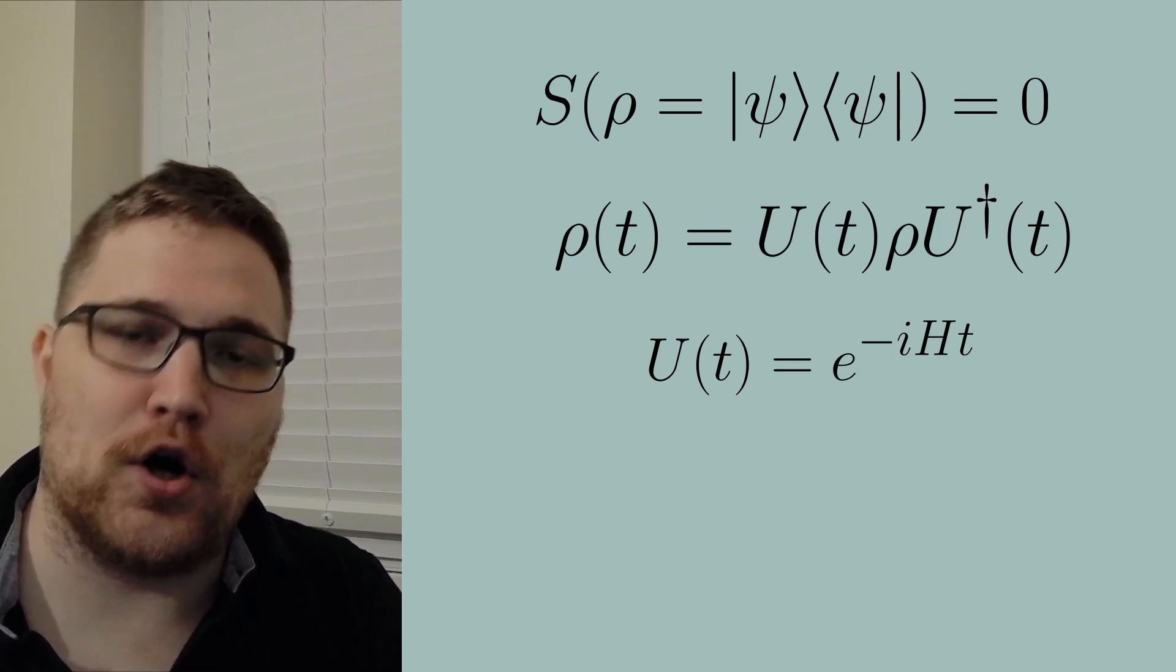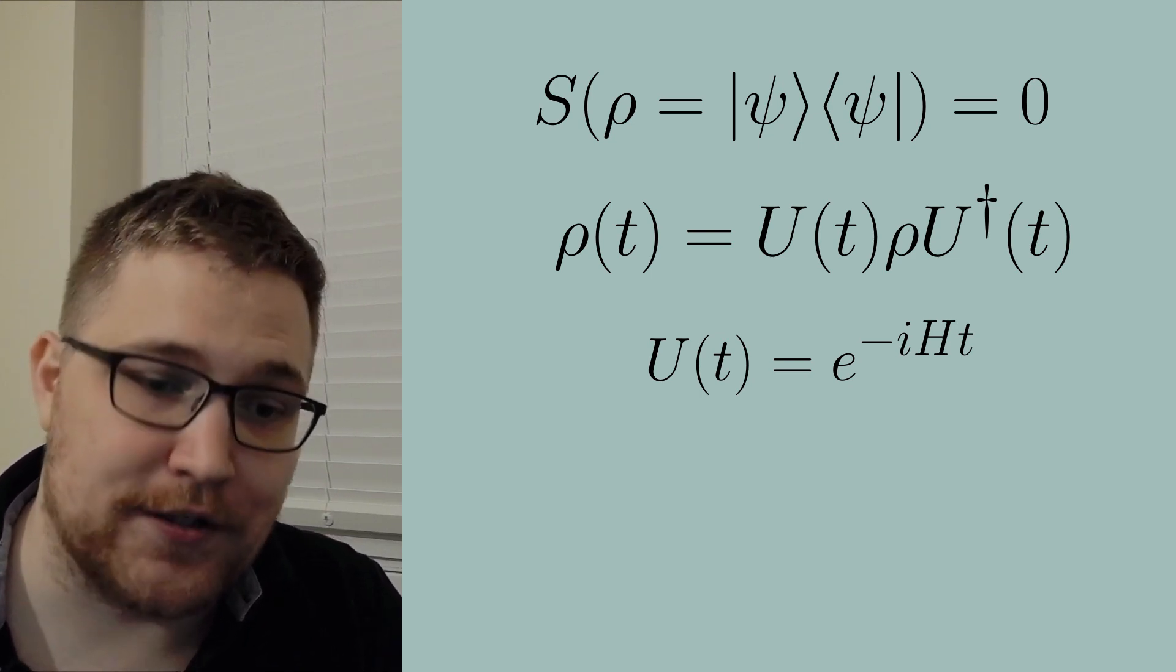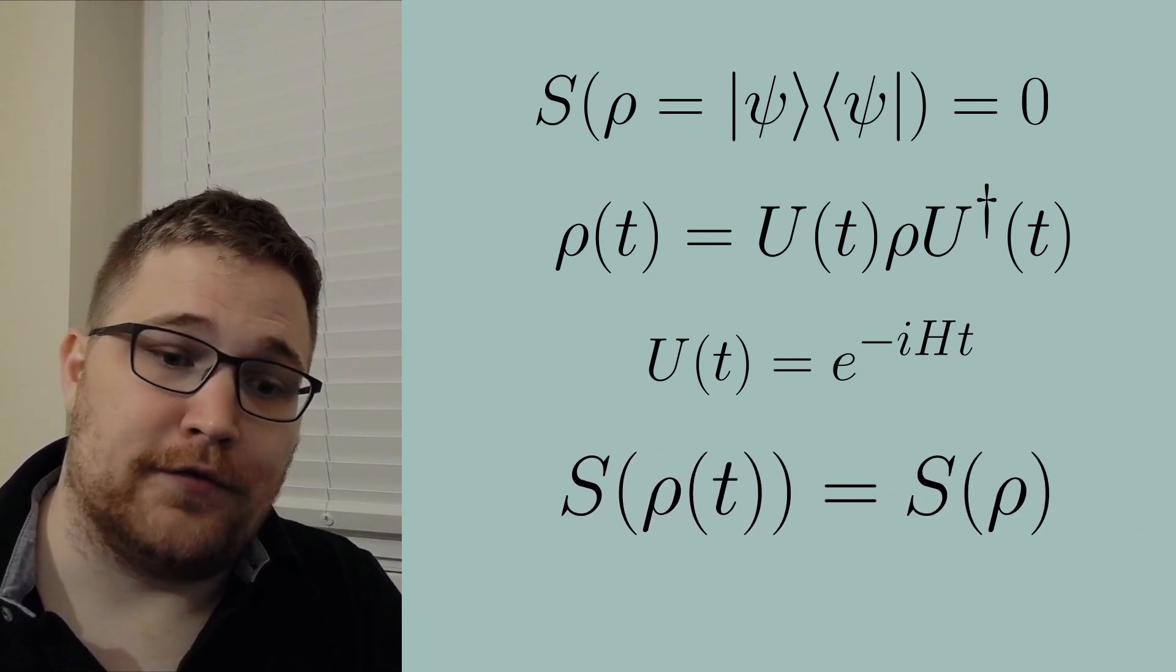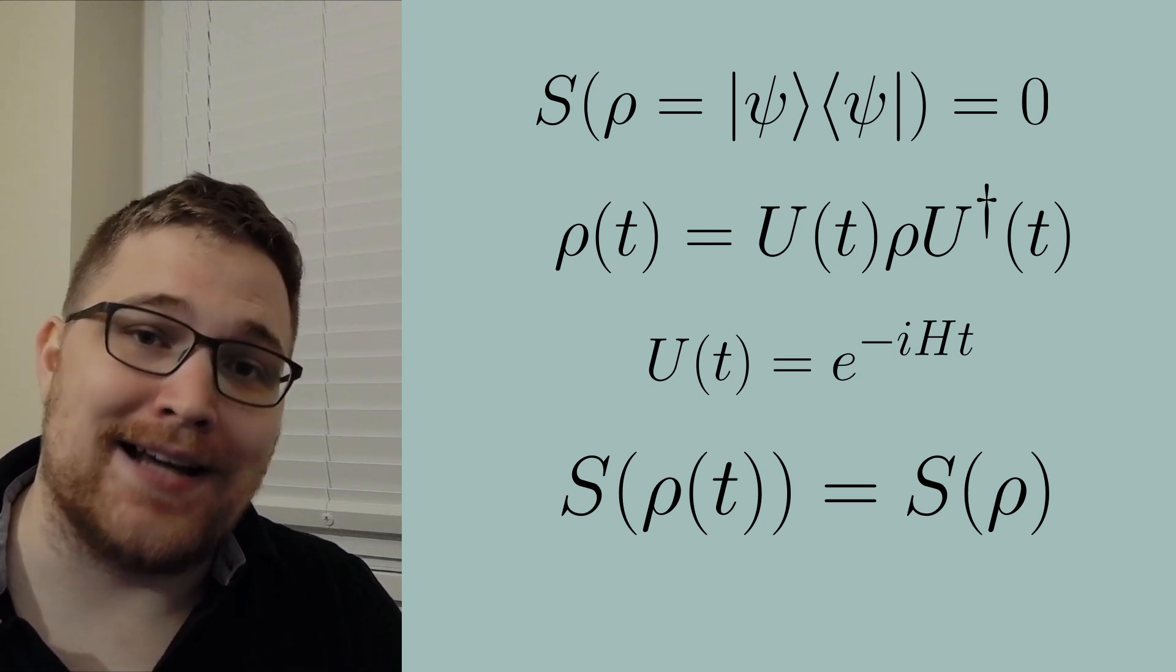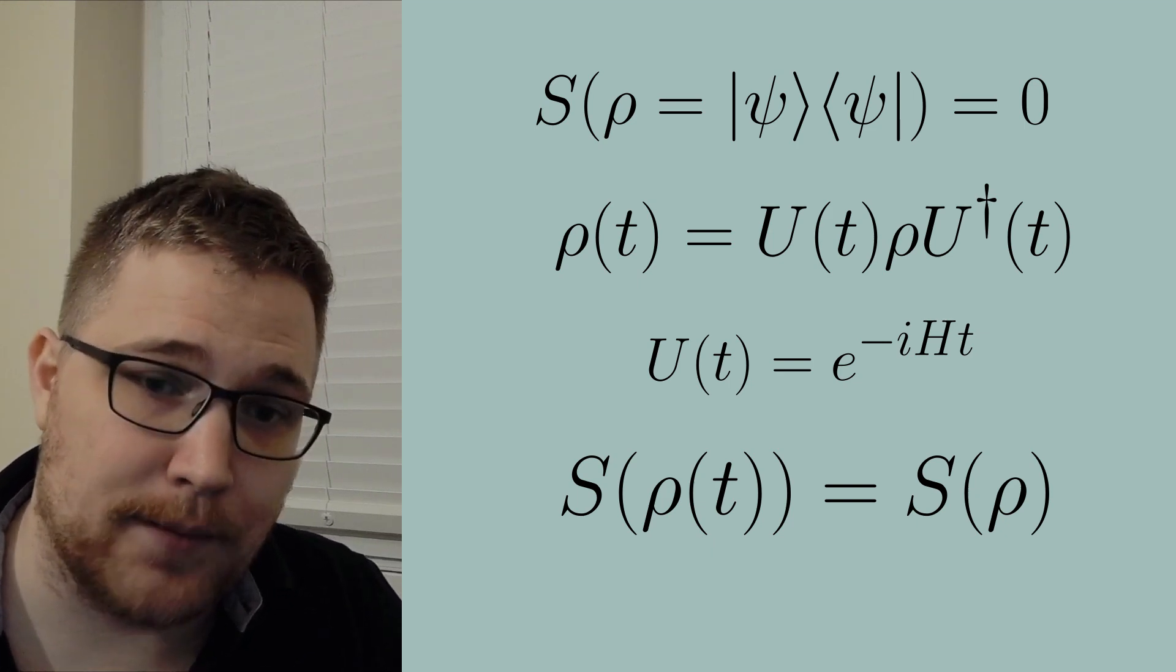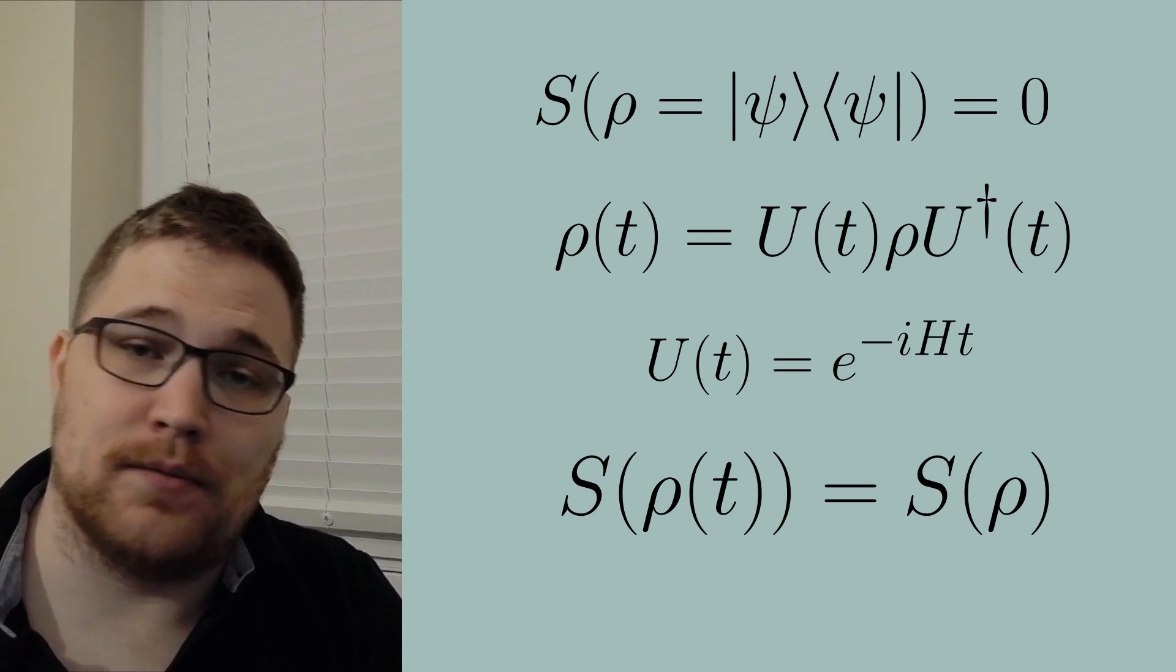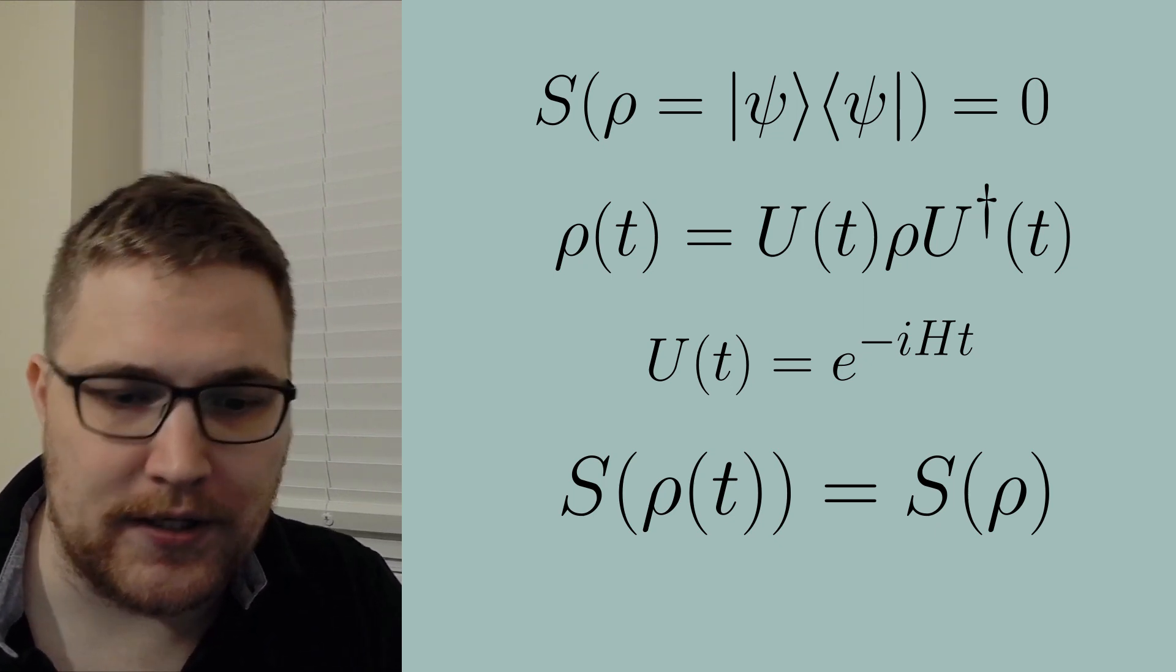We just proved that the von Neumann entropy is invariant under unitary transformations. So we have that the entropy of our density matrix at time t is equal to its initial value and for the special case of a pure state the entropy is zero for all time. So the answer to our video's question is no the entropy of the system does not increase and this is purely due to unitary dynamics.